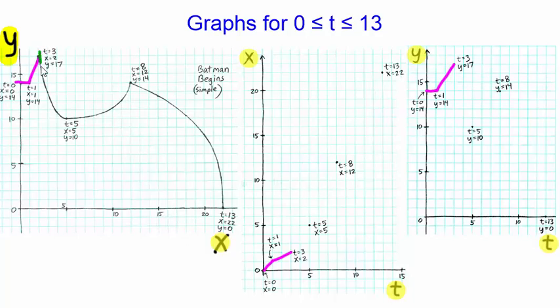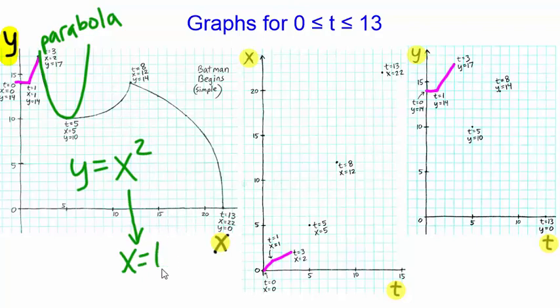For parabolas like the one you see here that open upward or downward as opposed to leftward or rightward, we're dealing with a transformation of the basic function y equals x squared. Notice that for this basic case, if we let x equal t, then by substitution we would conclude that y must equal t squared.